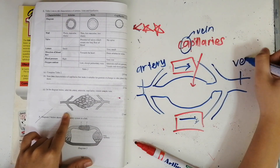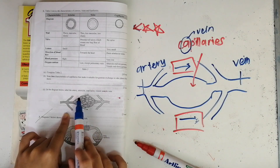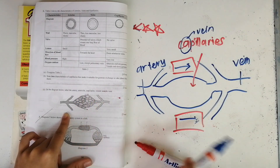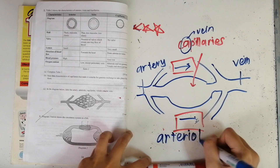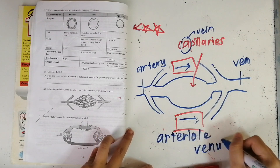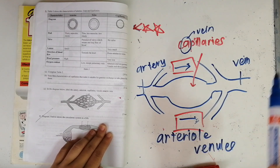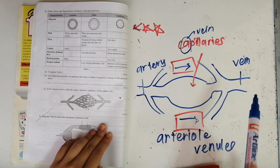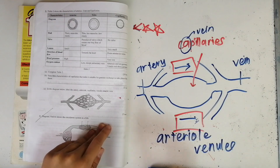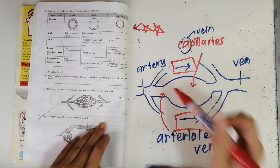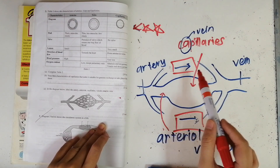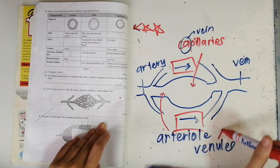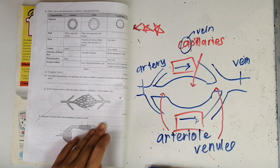We have two more terms to label: arteriole and venule. An arteriole is a mini artery and a venule is a mini vein. So the sequence is: artery → arteriole → capillary → venule → vein. You label the arteriole near the artery side and the venule near the vein side. That is how you label this diagram.